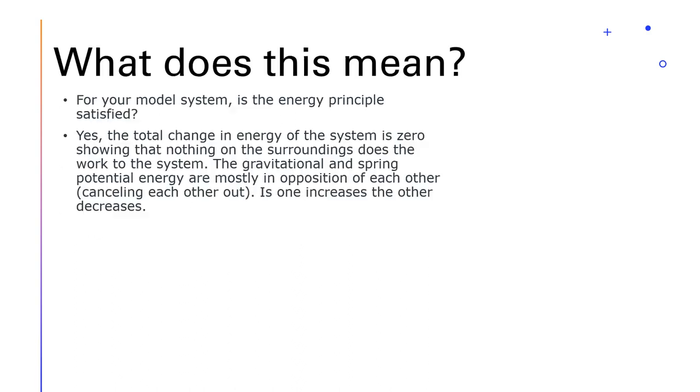So what does this mean? For your model system, is the energy principle satisfied? Yes, the total change in energy of the system is zero, showing that nothing in the surrounding does work to the system. The gravitational and spring energy cancel each other out in the opposite direction. As one increases, the other decreases.